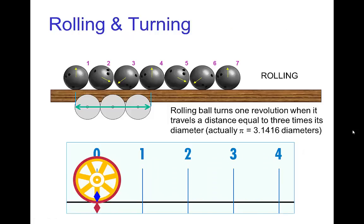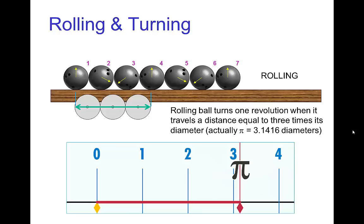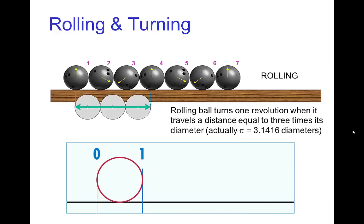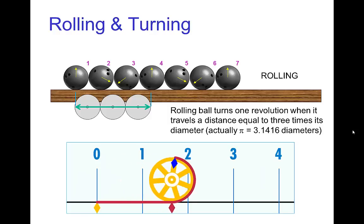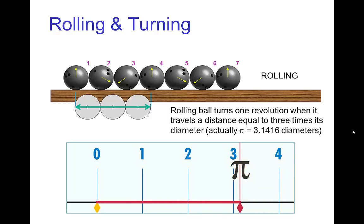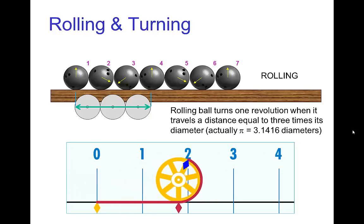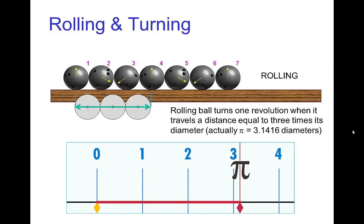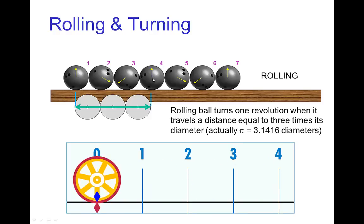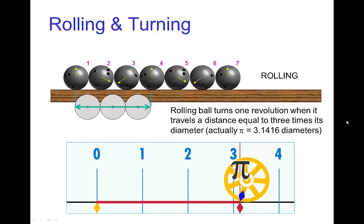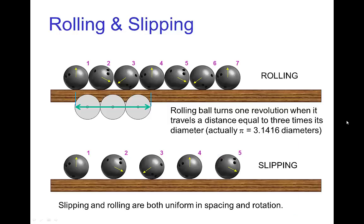As an object rolls, there's a close connection between the distance it travels and its rotation. A rolling ball will travel a distance slightly greater than three diameters — slightly more, that factor being pi — when it makes one full revolution. If the ball is turning but that distance is not synchronized with the rotation, then we don't actually have rolling. This would be slipping, where the distance traveled is disconnected from the amount the ball is turning.